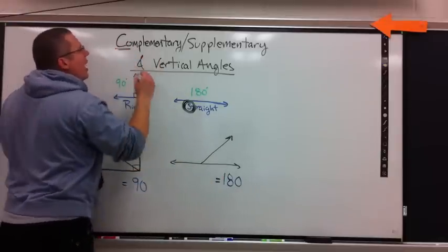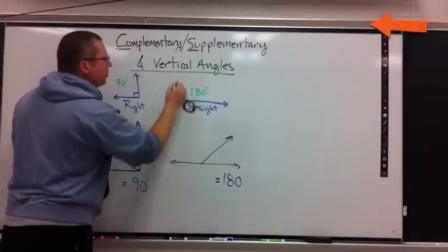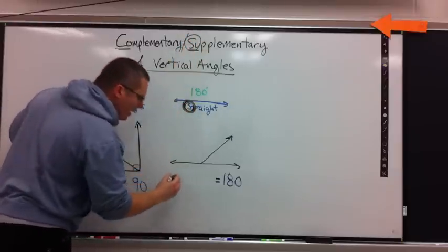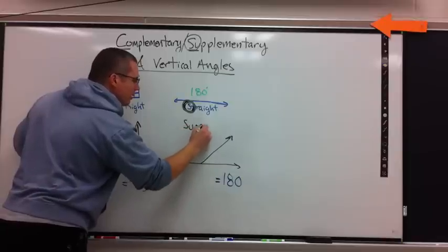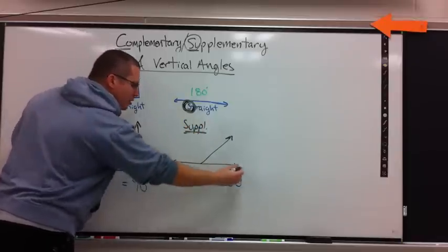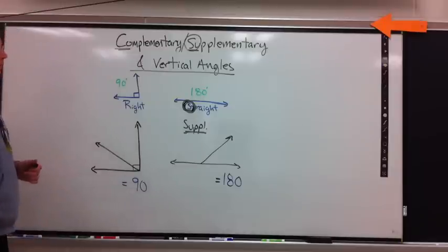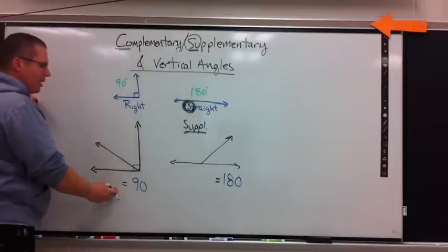My choice is complementary or supplementary. Which one should I pick? Which one makes a straight angle? That's right, it's supplementary. So when you take a look at this, this is supplementary. Why? Because it has an S in it just like a straight angle does. By default then, complementary is 90.